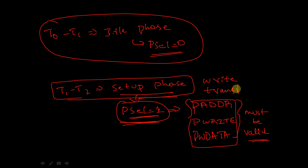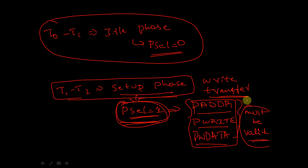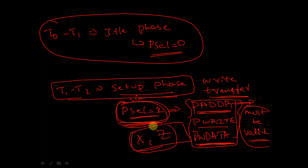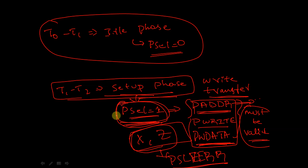In the setup phase, when P_SELECT is equal to 1, P_ADDRESS, P_WRITE, and P_WDATA must be valid. P_WRITE should be 0 or 1, and P_WDATA must contain valid data. If these signals are not valid in the setup phase, the slave interface will generate an error using P_SLVERR. So when P_SELECT is equal to 1, these three signals must be valid, otherwise it will be an error.